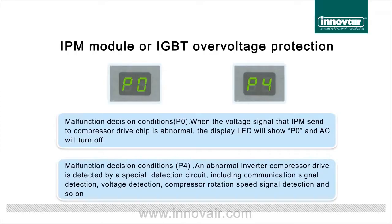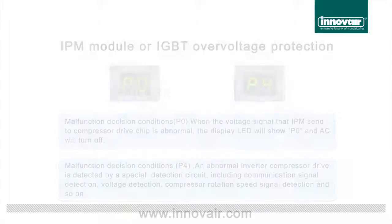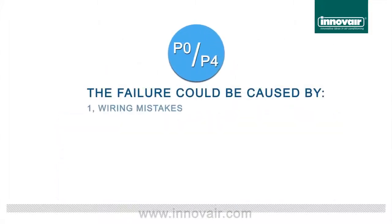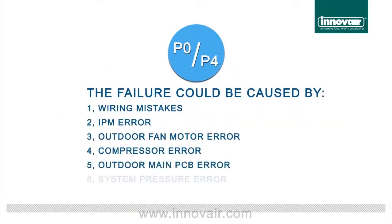Malfunction Decision Conditions, P4: an abnormal inverter compressor drive is detected by a special detection circuit, including communication signal detection, voltage detection, compressor rotation speed signal detection, and so on.